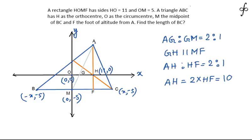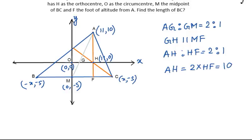Now as I got the length AH to be 10, the coordinate of A can easily be written as (11,10). Now after getting the coordinate of A, the coordinate geometry part will come into picture.